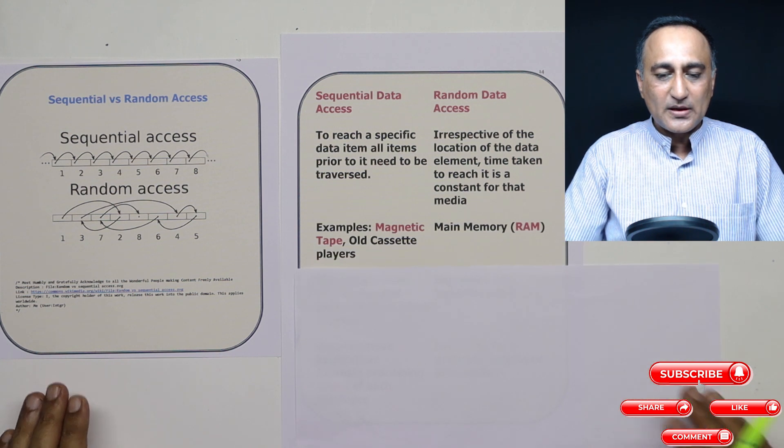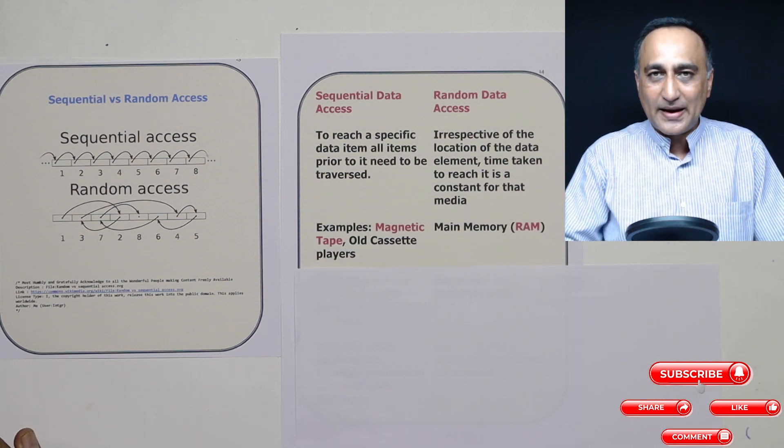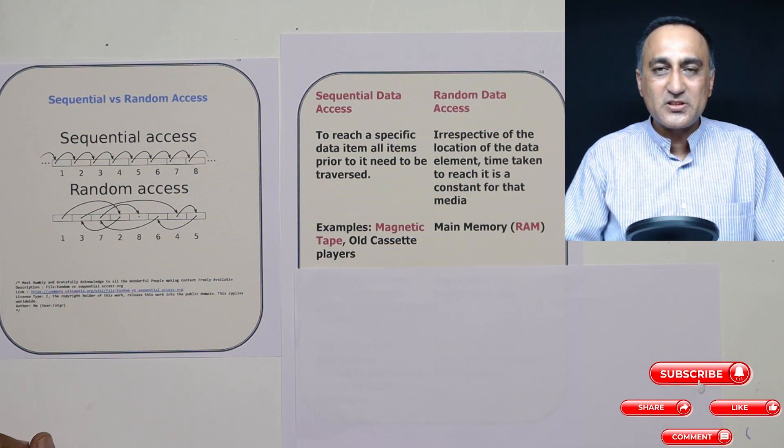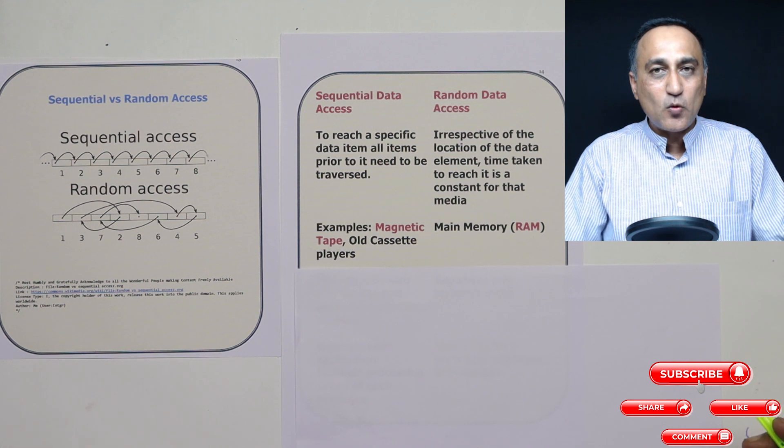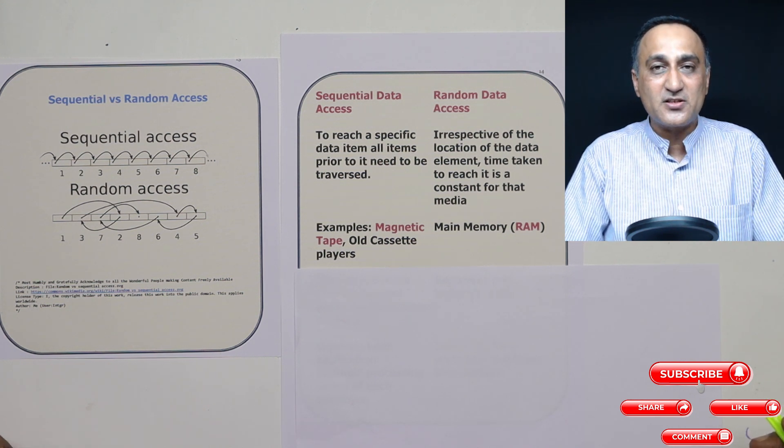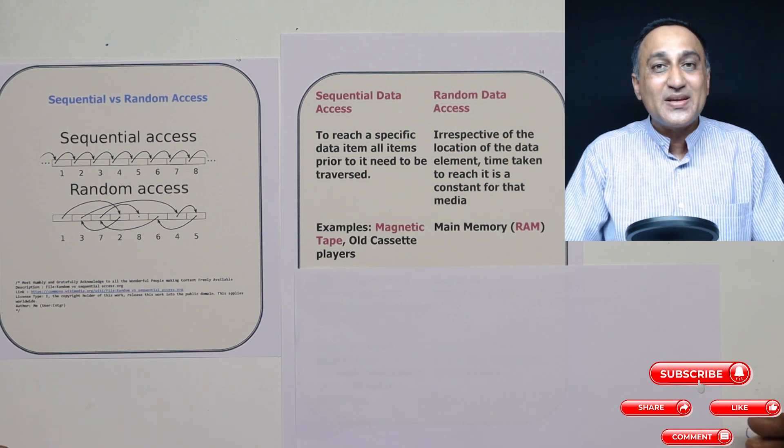Examples of random access memory is your RAM. RAM has to be random access memory because then only it's able to be super fast. Whereas your old magnetic tape or if you have got your cassettes in your house, you can ask your mommy papa if they listen to songs. The old cassettes were sequential.